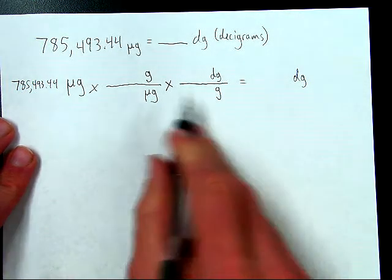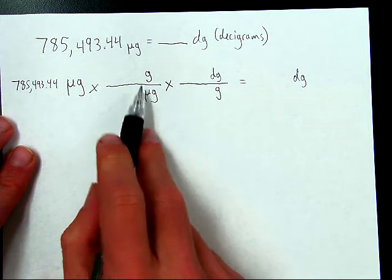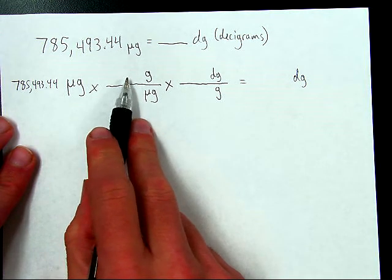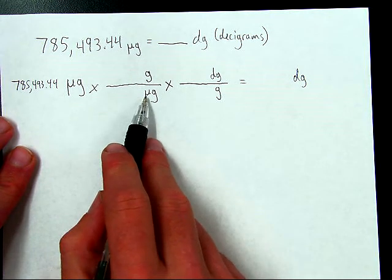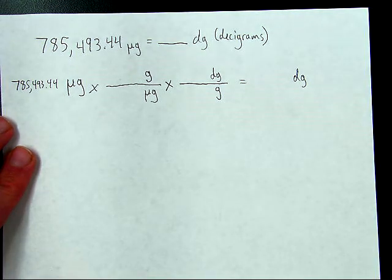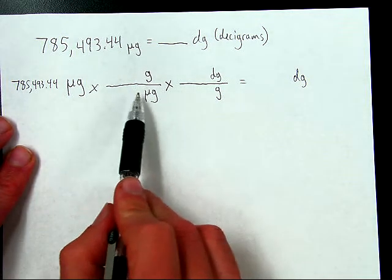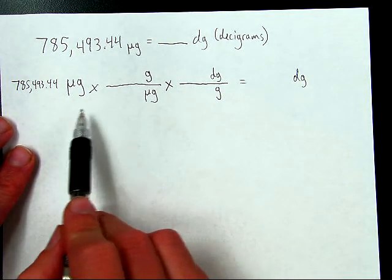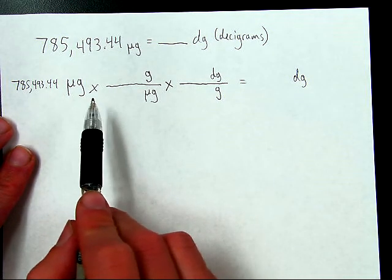And then I need to figure out what these conversion factors are. The question is, okay, micro, that's one of those things you've got to memorize. Micro means one one millionth, as in it's a really small part of a gram. So it involves the number a million. Now remember, when you figure out the conversion factor, the big number goes next to the small unit. So the big number is a million.